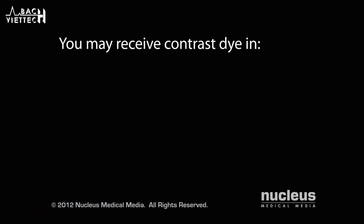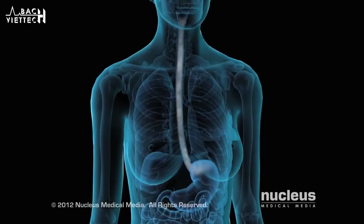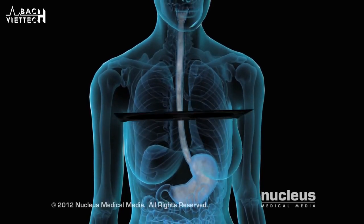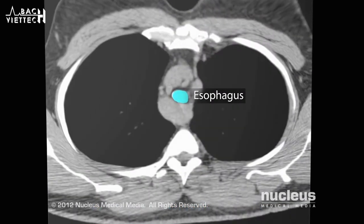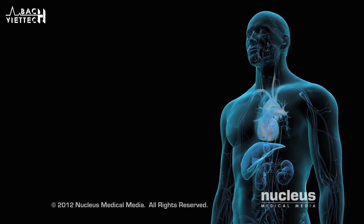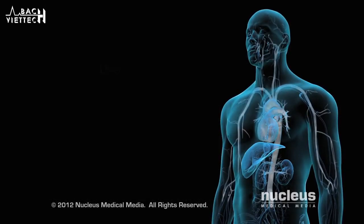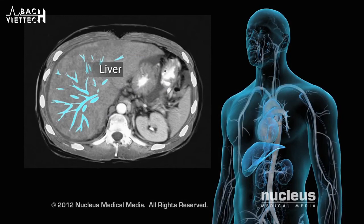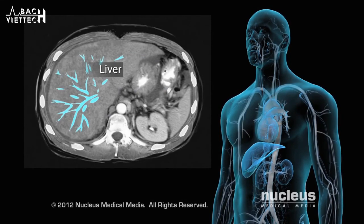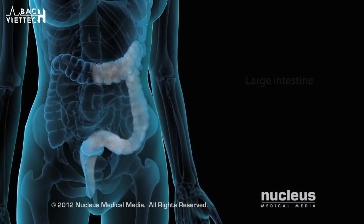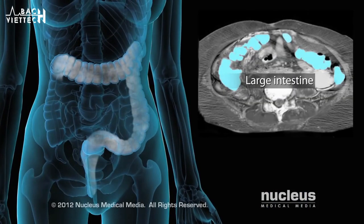In some cases, you may receive contrast dye before your procedure in a drink, an injection, or a barium enema to make it easier for your doctor to see certain areas of your body. If you received a drink with contrast dye, your esophagus or stomach will be highlighted. If you received an injection, your blood vessels, gallbladder, liver, or urinary tract will be highlighted. If you received a barium enema, your large intestine will be highlighted.